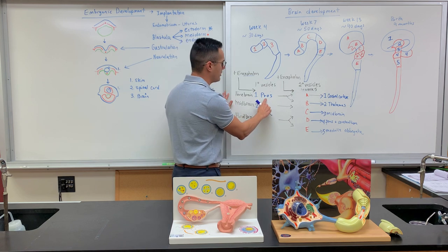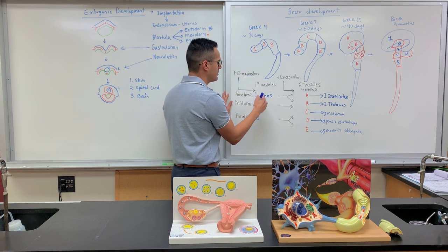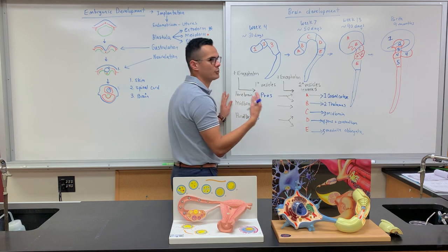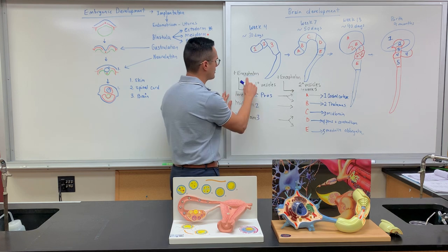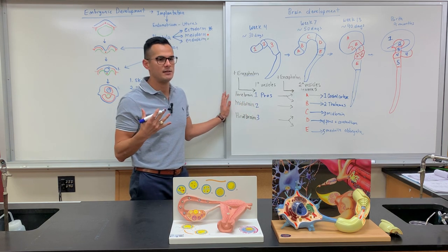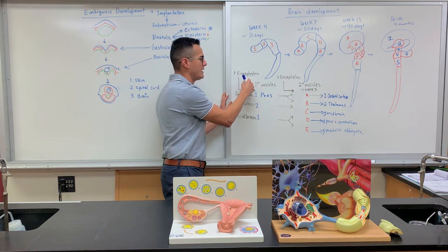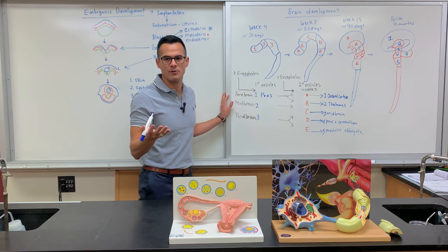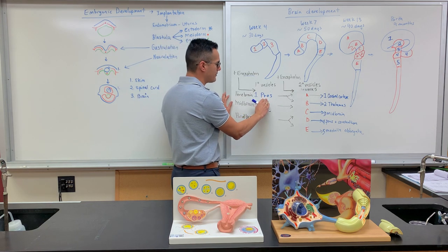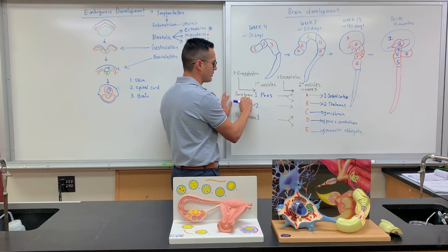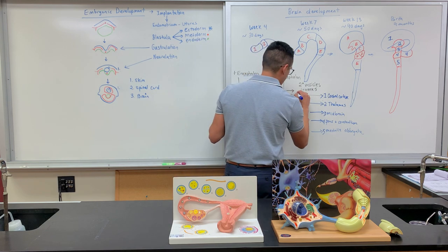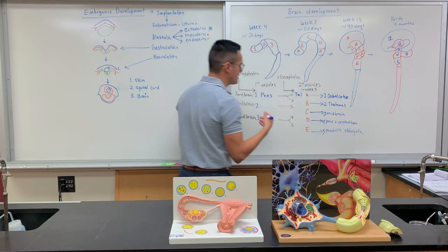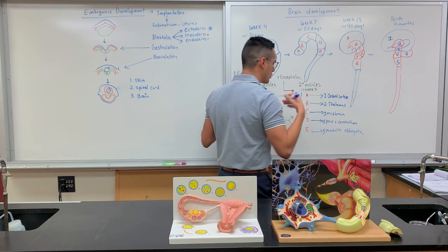I'm just writing the prefix because if we add 'encephalon' to it, that gives you the full term. If we break the word down: 'cephalic' pertains to the head — so within the head, that's referring to the brain. So you have the prosencephalon, which is what we call the forebrain. The prosencephalon is what will develop into the telencephalon as well as the diencephalon.